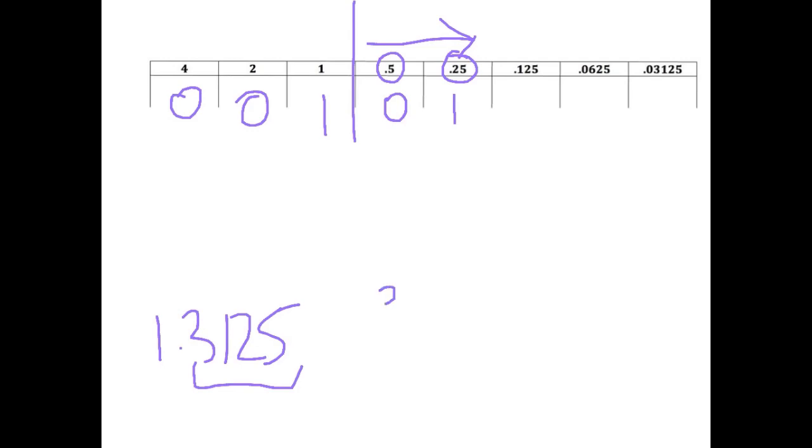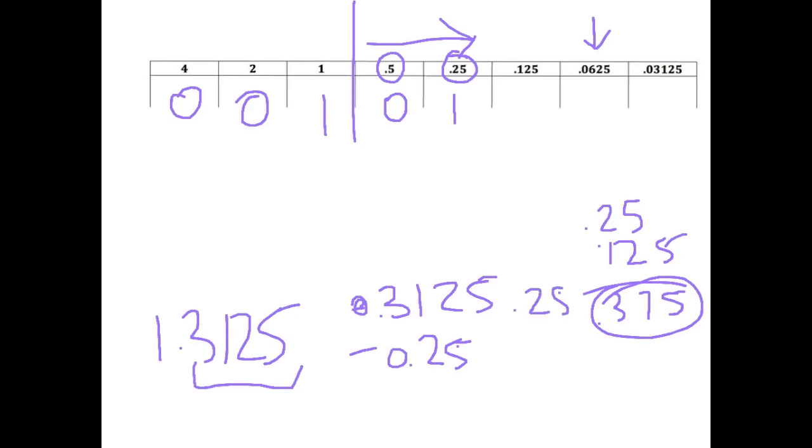So we could do 0.3125 minus 0.25, and I'm a little bit lazy for that. So what I would do is I would actually just try and add together 0.25 to 0.125 and see what I got. I got 0.375. And that number is too big, so it's not that one. So I'm going to try with the next one, 0.0625. So I'll find some space on my page and I'll take 0.25 and I'll add 0.0625.